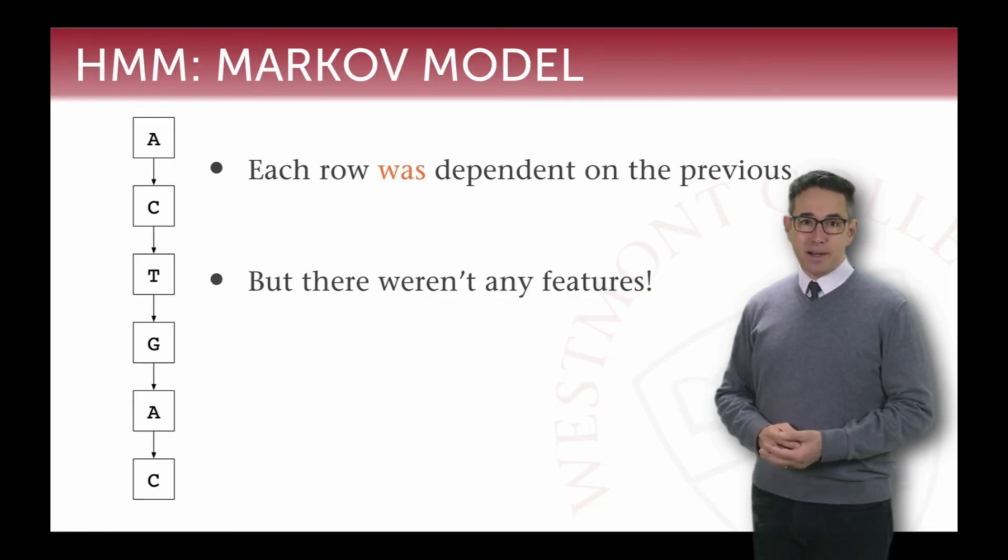And so in this case, each row was dependent on the previous one. But if you think about this in the model that we were just looking at with respect to the vending machine, this data actually doesn't have any features. All we have is a class that we're trying to predict. And we're trying to predict it based on the previous class in a sequence in which the sequence does matter a lot.